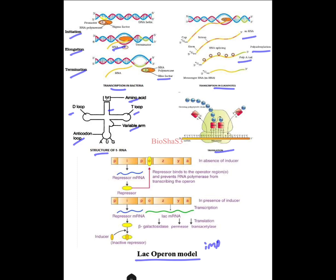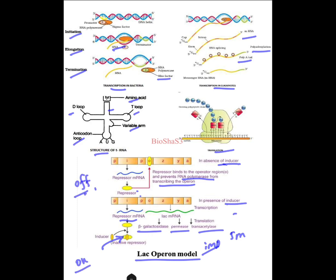The lac operon model is highly important for your five-mark question. Explain the lac operon switch-on and switch-off conditions. If there is a repressor and no inducer, the repressor comes and binds to the operator region, preventing RNA polymerase from transcribing the operon — the operon is OFF. If an inducer is present, the inducer binds to the repressor so the repressor cannot bind to the operator region, the lac mRNA undergoes transcription, producing beta-galactosidase, permease, and transacetylase — the operon is ON.